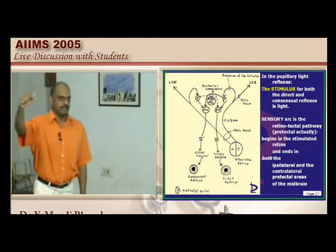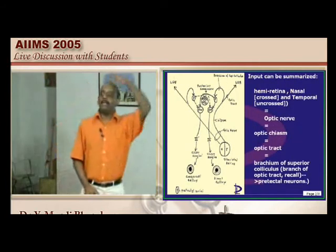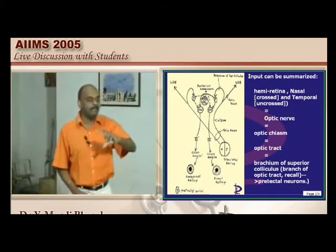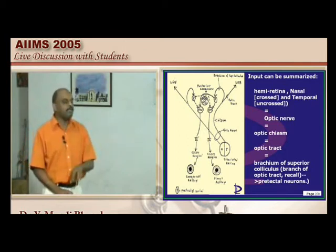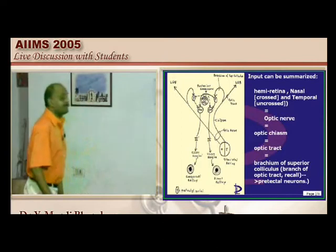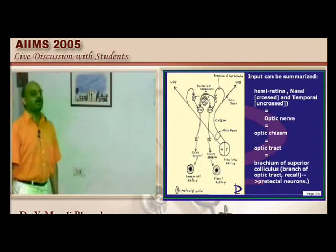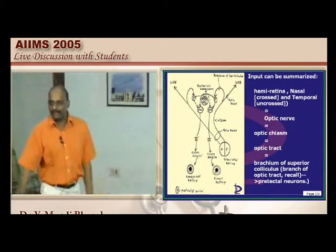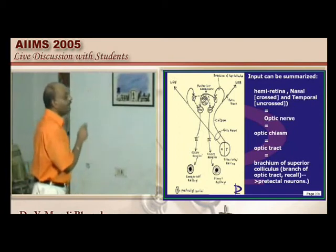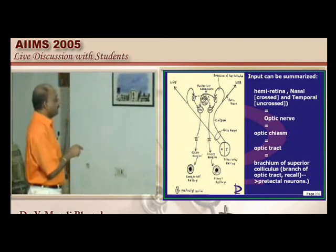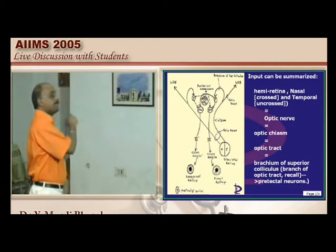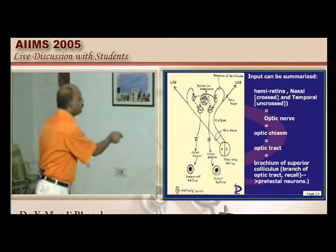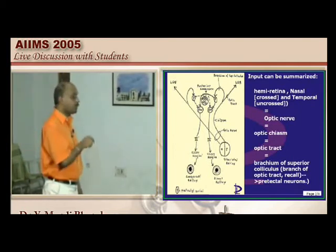From the pre-tectal nuclei, the signal goes to the Edinger-Westphal nucleus — both ipsilateral and contralateral via the posterior commissure — which is why throwing light in one eye causes consensual light reflex in the other. From Edinger-Westphal, the signal goes to the third cranial nerve nucleus, then to the ciliary ganglion, then to the constrictor pupillae muscle, causing pupillary constriction.